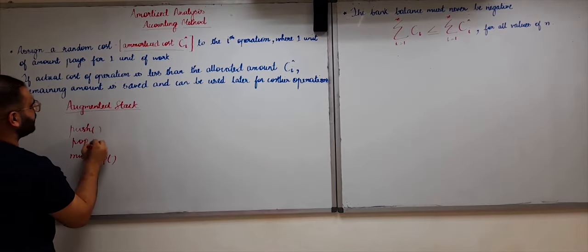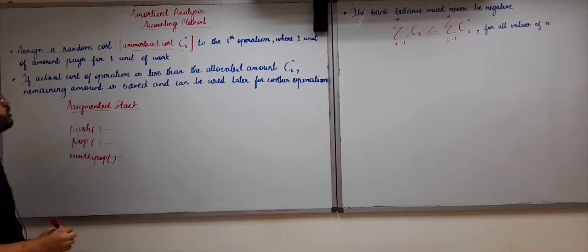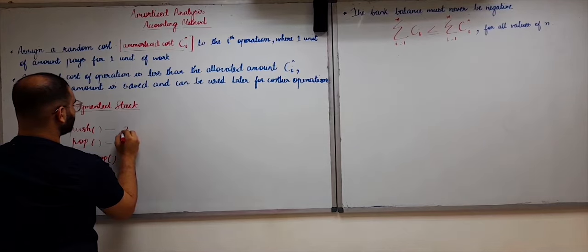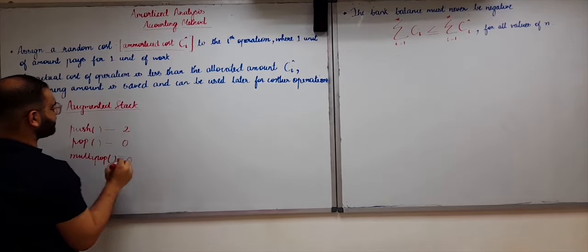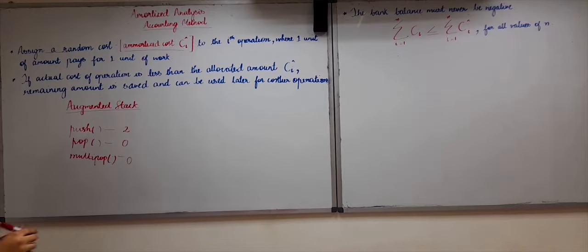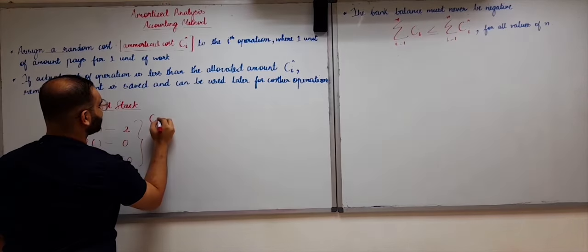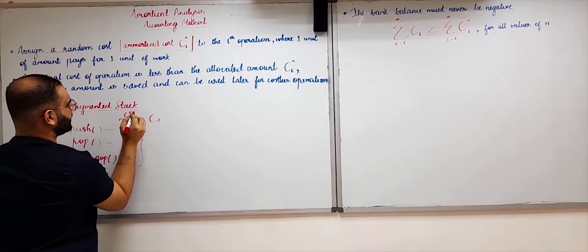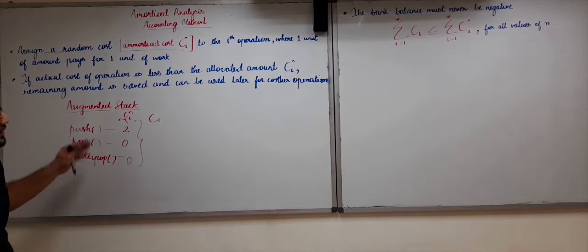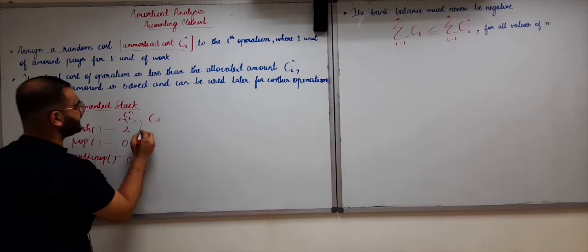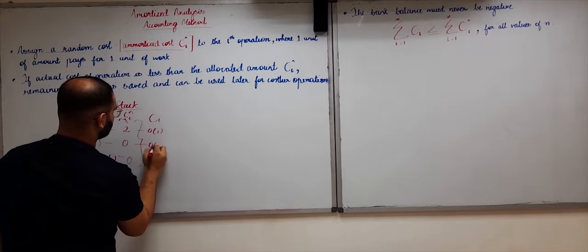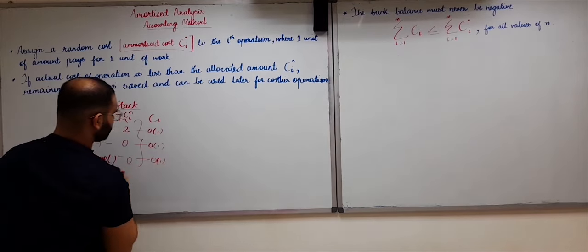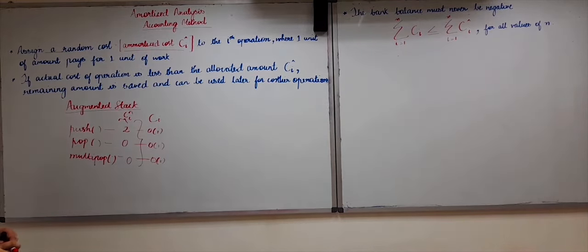Now let us assign a random cost. Let us assign push as 2, pop as 0, and multipop as 0. The actual cost — let us call it ci — versus the amortized cost ci-cap. The actual cost of these operations is all order of 1, and the worst case is order of n, but let us consider it as order of 1 because we are talking about amortized time complexity.